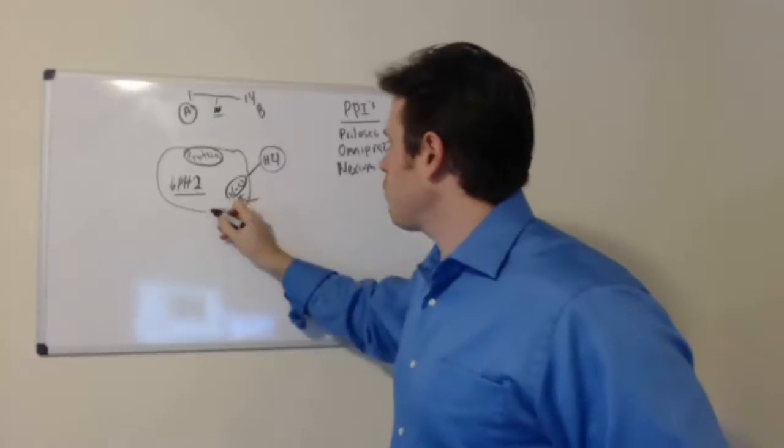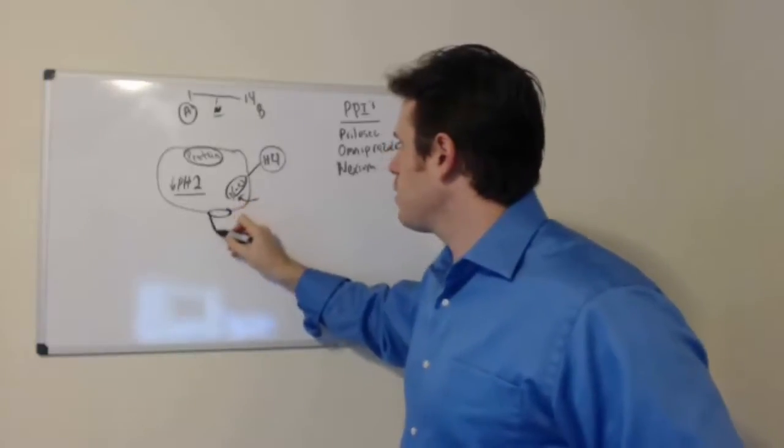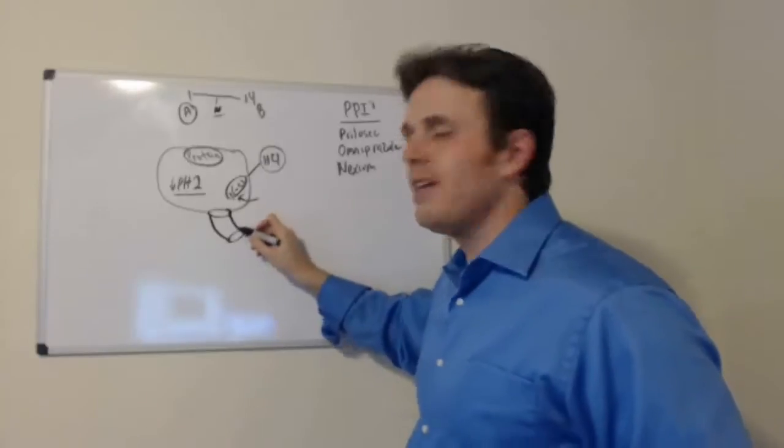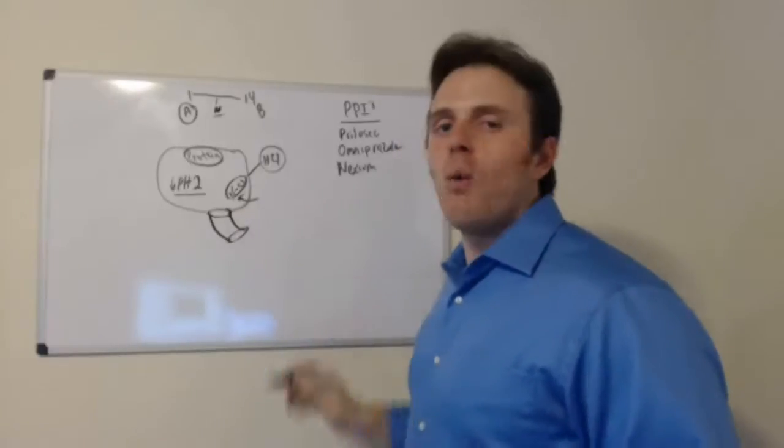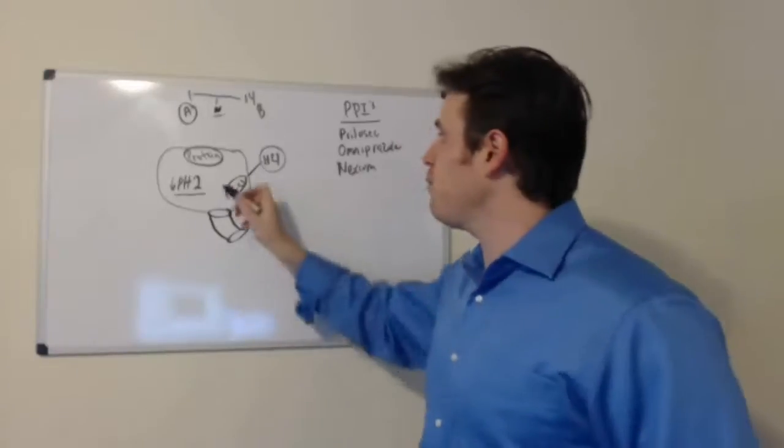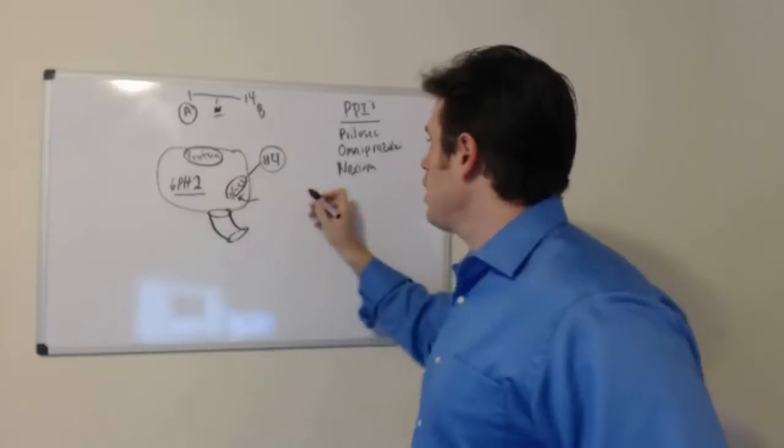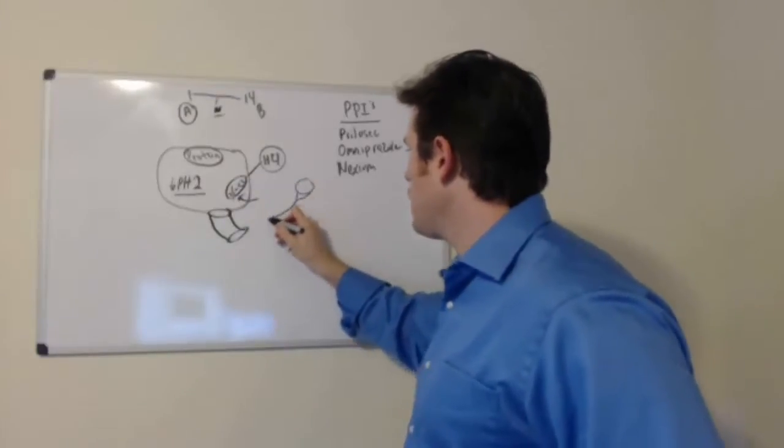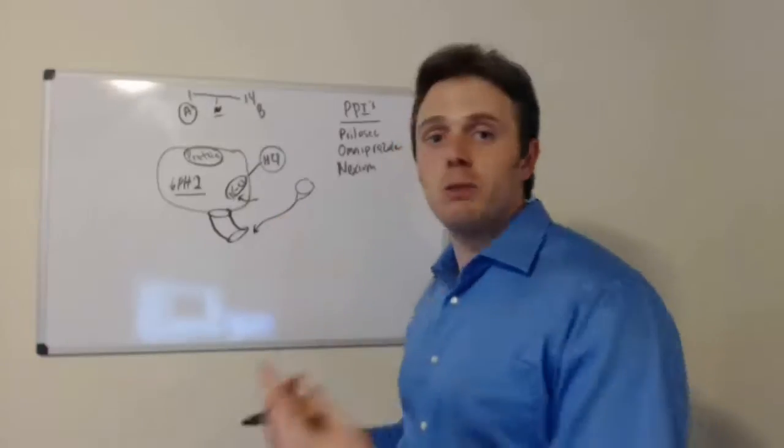And then once the food is released from the stomach and it goes into the duodenum of the first part of the small intestine here, if it's not acidic, what happens is the gallbladder produces bile that now breaks down fat. So if we have an acidic pH here, the gallbladder pumps out bile into the small intestine.